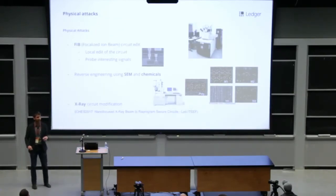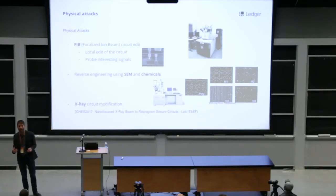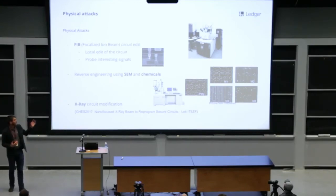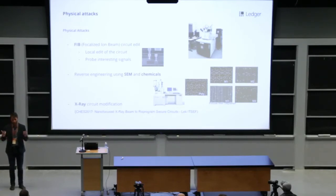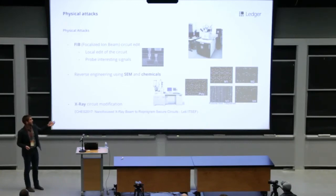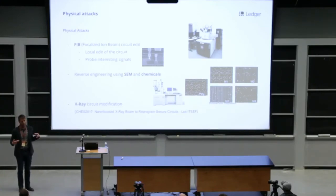Just a quick word on physical attacks. Here's a FIB. This machine is used for defect analysis during IC manufacturing, but this machine can also be used to mount an attack. With this machine, we can edit very locally a circuit and then probe interesting signals. So that means the attacker will be able to probe the signals connected to the register of key or maybe the PIN registers and so on. So this is very efficient, but this machine is very costly. It costs more than $1 million and it requires also the attacker to have good expertise, but on-the-field attacks using this machine exist.